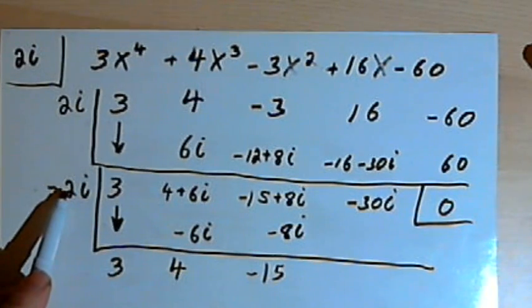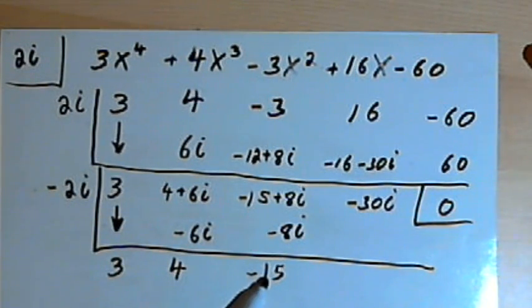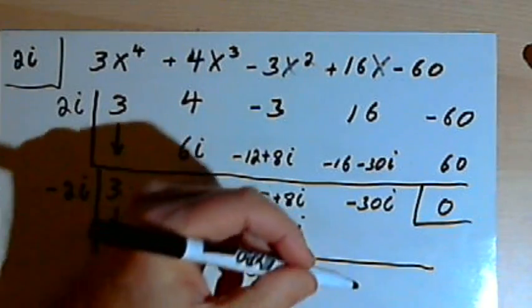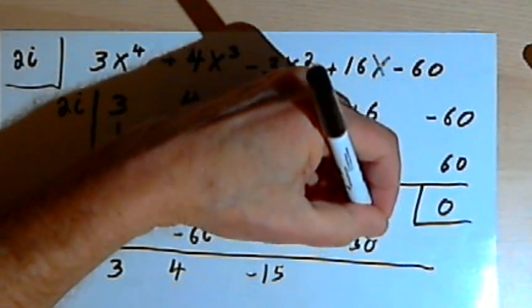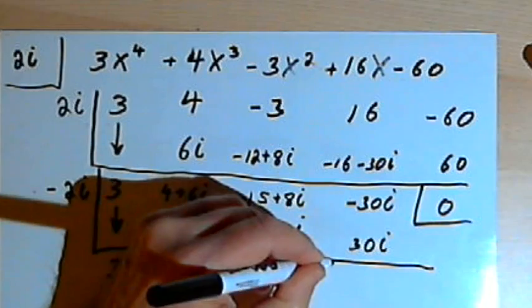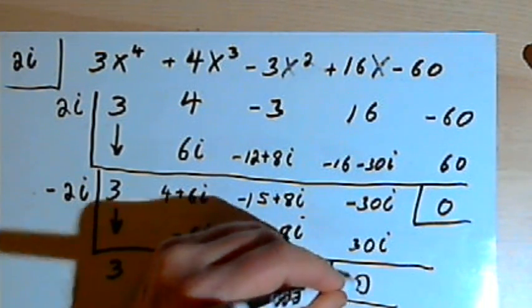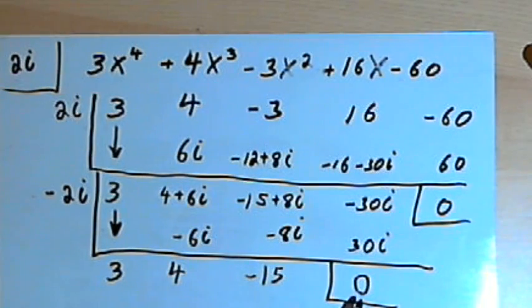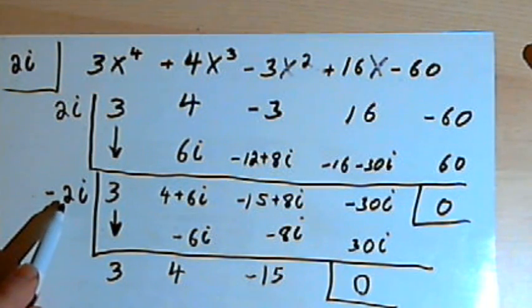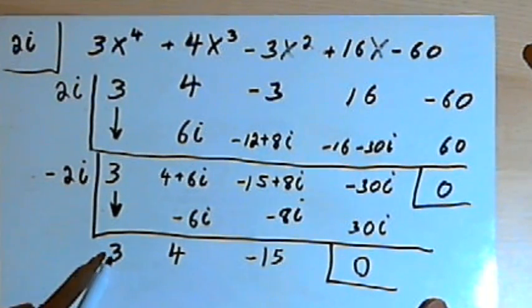Okay, the last multiplication is negative 2i minus 15 is positive 30i. Add that to the last column. Those two are going to cancel, negative 30i and positive 30i. So once again I get a zero remainder, which is good, because I knew that negative 2i had to also be a zero of this function.